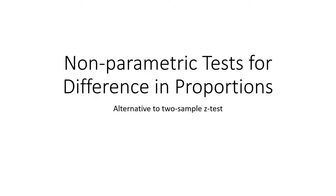In this video, we're going to take a look at how we can do a non-parametric test for difference in proportions. This would be an alternative to using a two-sample z-test to test for difference in proportions.